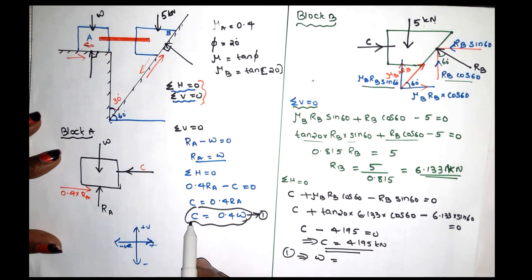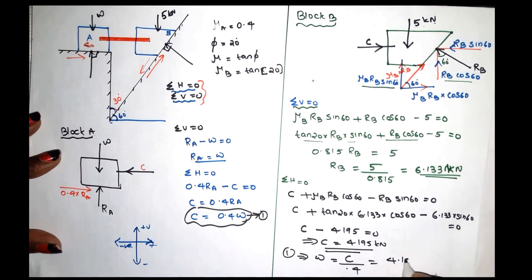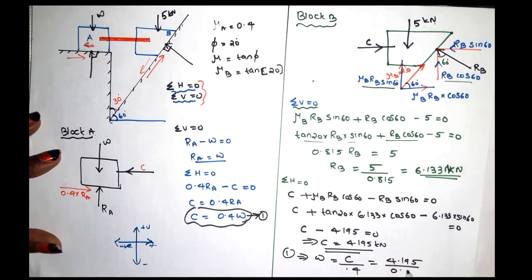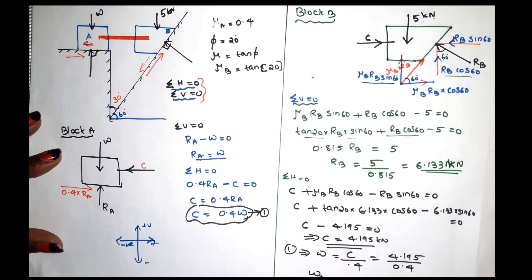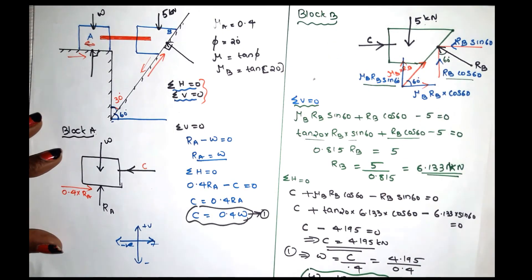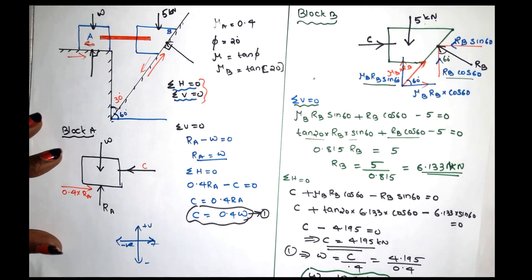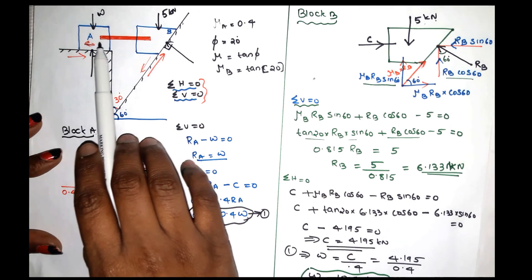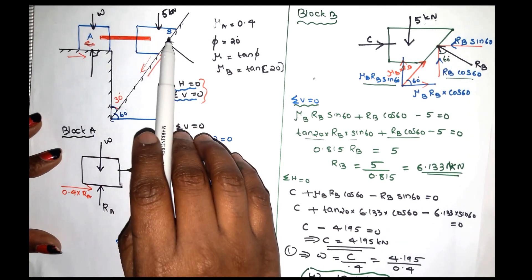From equation 1, C equals 0.4 times W, so W equals C divided by 0.4. Substituting C equals 4.195 kN, W equals 10.48 kN. Therefore the minimum weight W of block A for the system to remain in equilibrium is 10.48 kN.